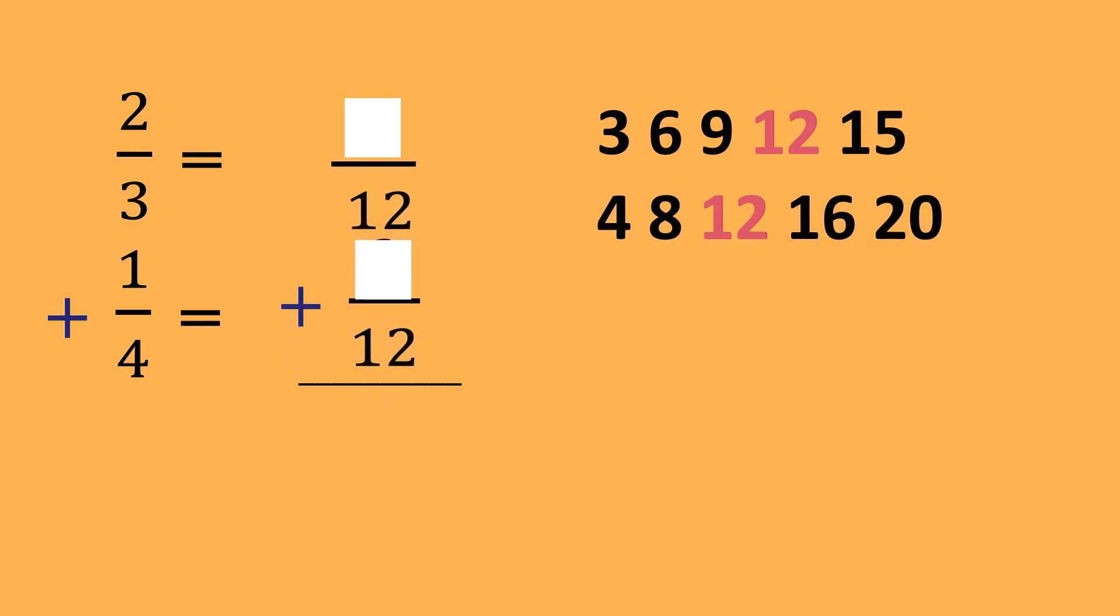So, ganun din. 12 divided by 3 is 4. 4 times 2 is 8. Parehas lang. 12 divided by 4 is equal to 3. 3 times 1 is equal to 3. And then, i-add natin sila. 8 plus 3 is equal to 11 over the common denominator which is 12. So, kung ano yung mas gusto mo, patayo o pahiga, okay lang. Walang problema, basta tama ang sagot.